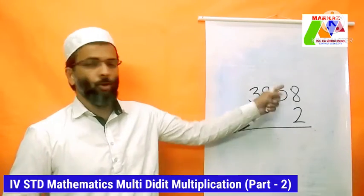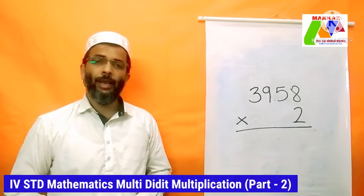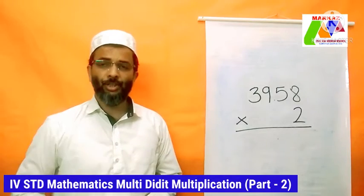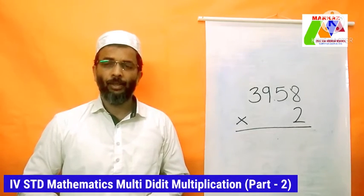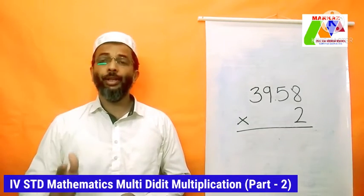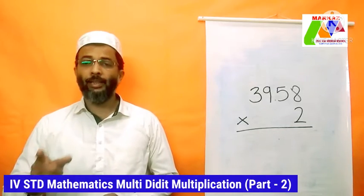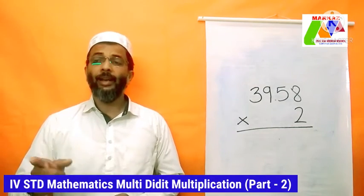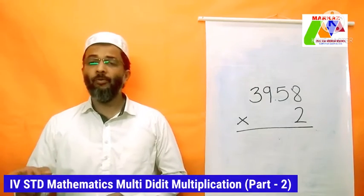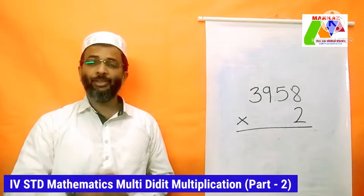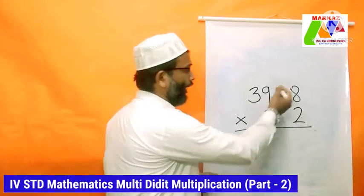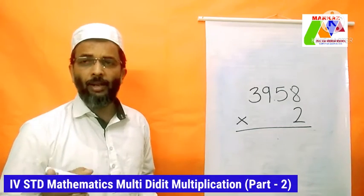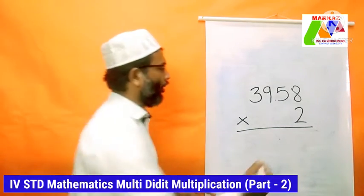Here we go with the first step: we multiply the bottom digit by the top digit in the ones place. 2 × 8 = 16. We have a two-digit answer, so we need to carry the digit that is in the way and add it back in after we complete the next multiplication step. So we carry the 1 to the top of the tens column.